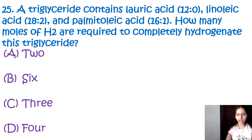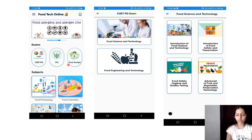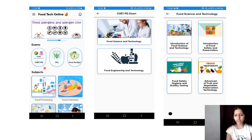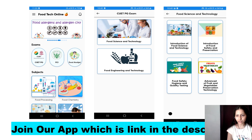With this we have completed our training — a few important questions of fats and oils. If you have not yet installed our app Food Tech Online, you can install it. There are various sections: CUET, FCI, Food Analyst, FSO, and food-related examinations like GATE 2025 and others. If you are preparing for any food-related examination, you can install this app, practice questions daily, and enhance your preparation. The link is given in the description box.